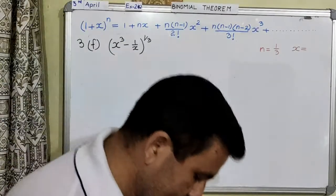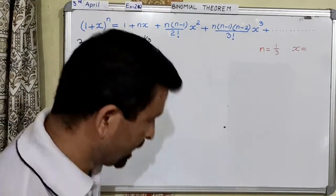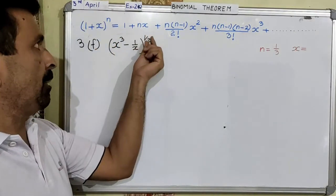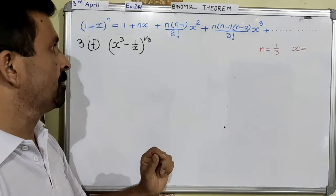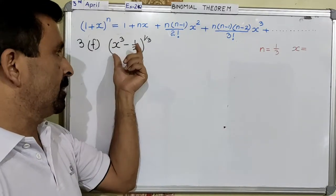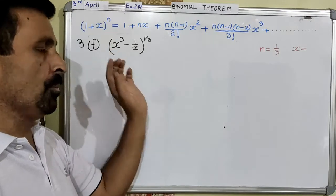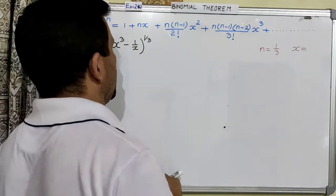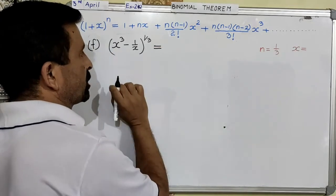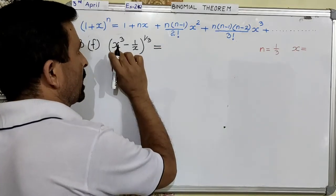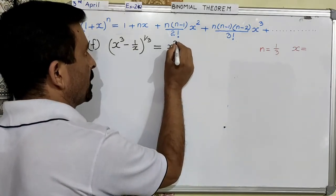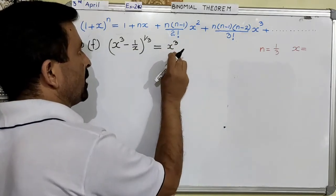This is the second question of the same type. Here you can see again the first term is not 1 and the power is a fractional number, but the first term is not 1. Therefore, this question also we need to modify. In the previous question you may remember how we made the first term 1 — so whatever is the first term will come out. x cubed is the first term.